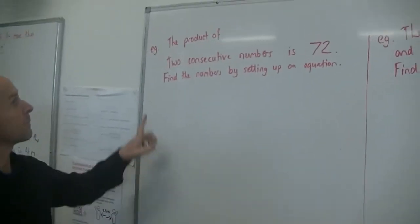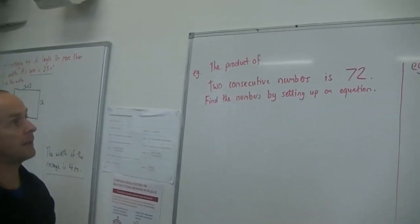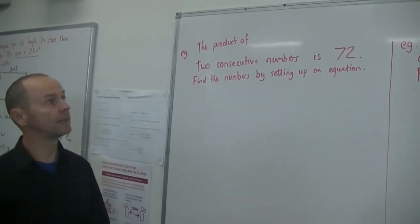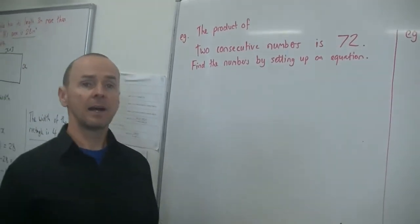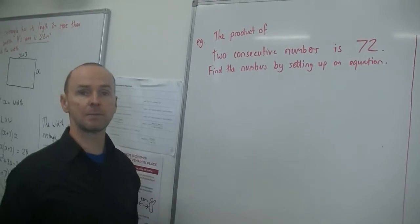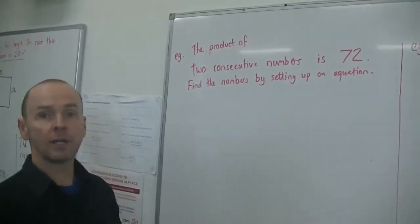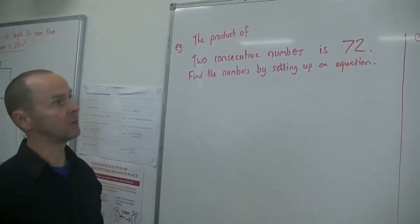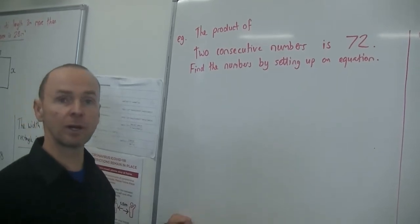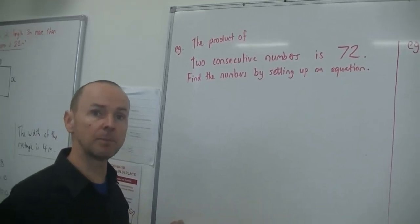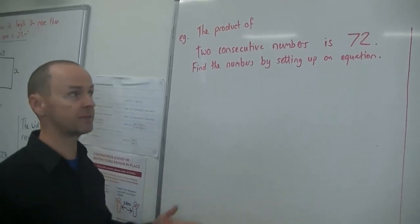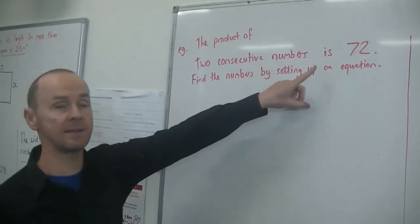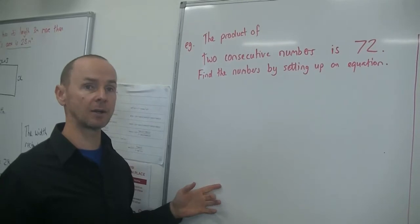The product of two consecutive numbers is 72. Find the numbers by setting up an equation. In class, I always hear kids say, I can do this in my head. But we want to see workings out to get full marks in a test. So yes, you might know what the answer is straight away, but when it's a harder problem, you won't. So that's why you need to know the process. We're teaching you the process, so you can apply it to easy questions, but then you can apply it to harder questions as well.